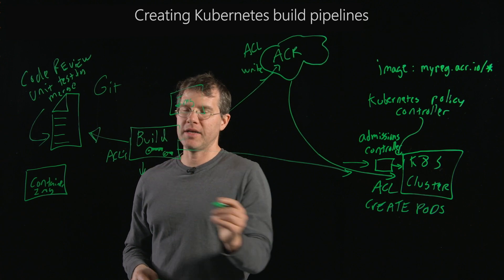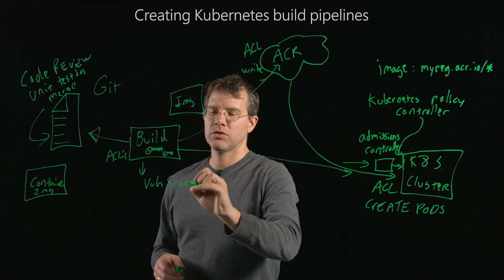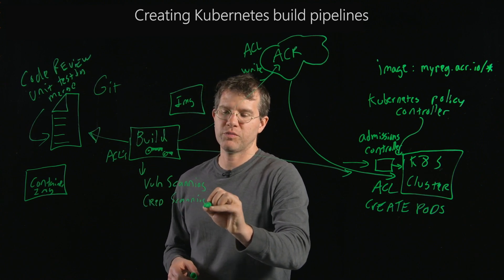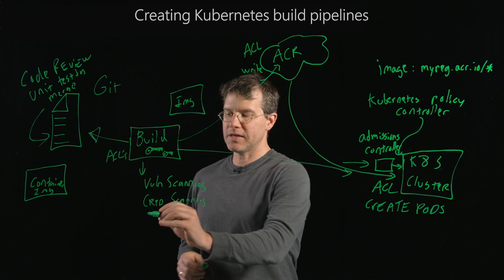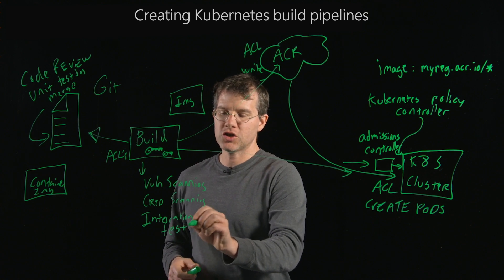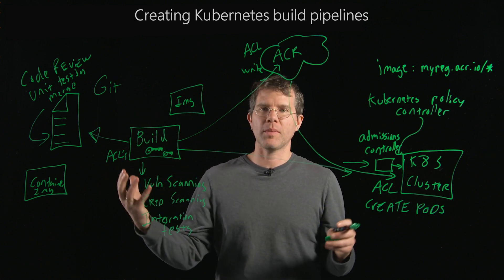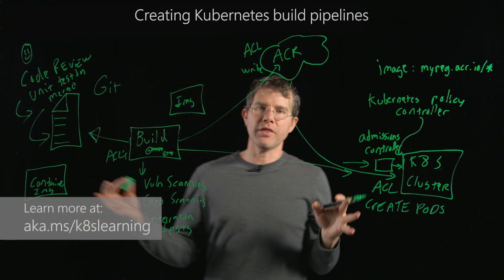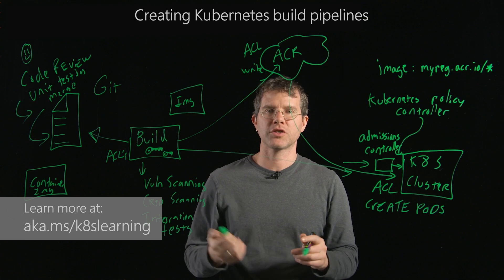Inside of that build pipeline, it's really great to have a bunch of different compliance pieces. This includes things like vulnerability scanning for libraries that may have vulnerabilities, credential scanning for users who have placed database passwords, certificates, or other privileged information into the code, as well as integration testing to ensure that you have a reliable application deploying out into your cluster. Ultimately I hope this gives you a good picture about how you can put together users via code review submitting code with no other permissions, building and pushing images through a pipeline all the way out to deploying your application to a production Kubernetes cluster.